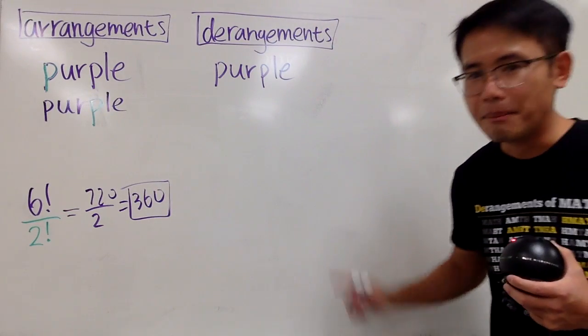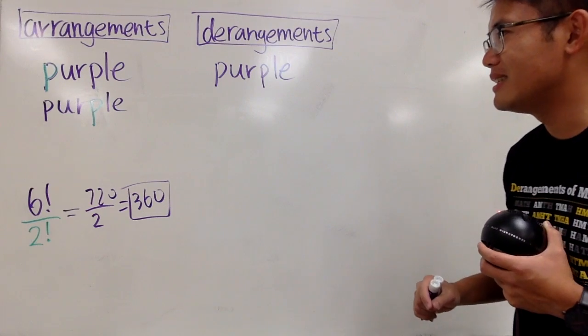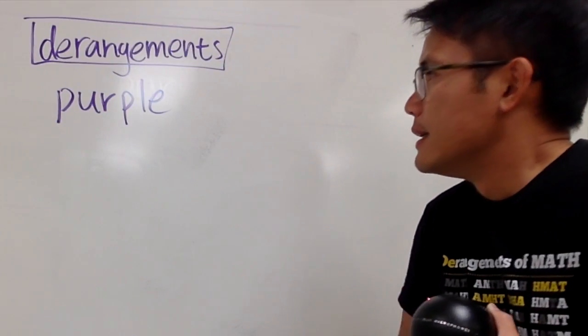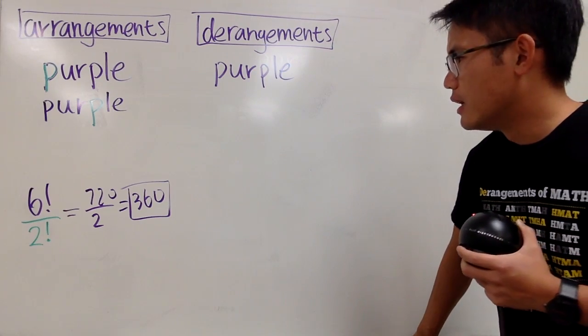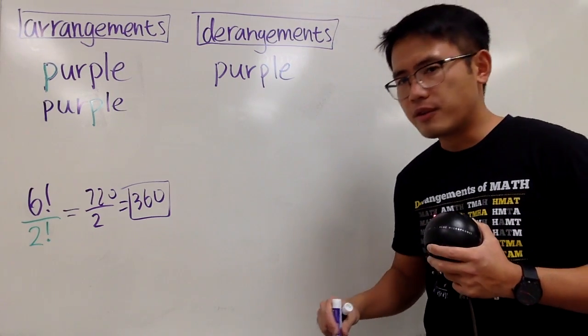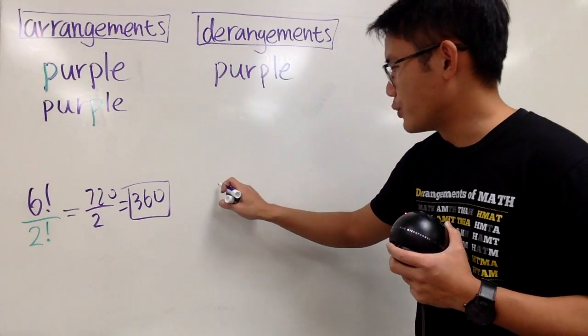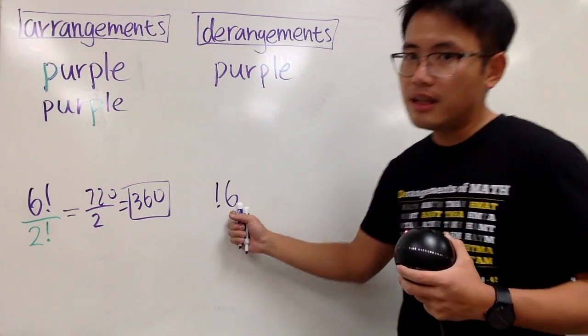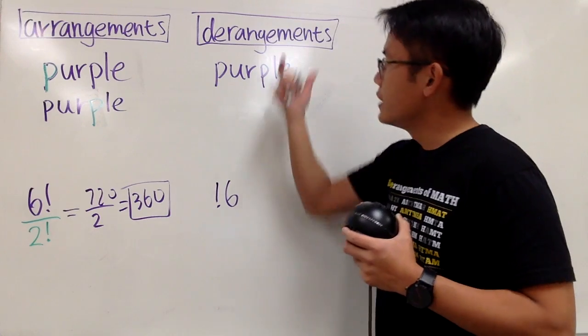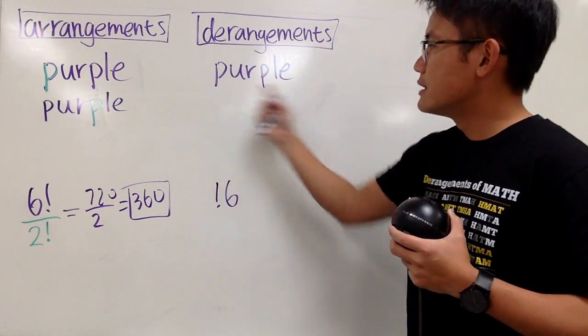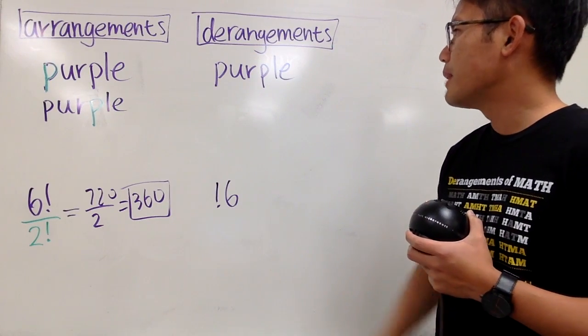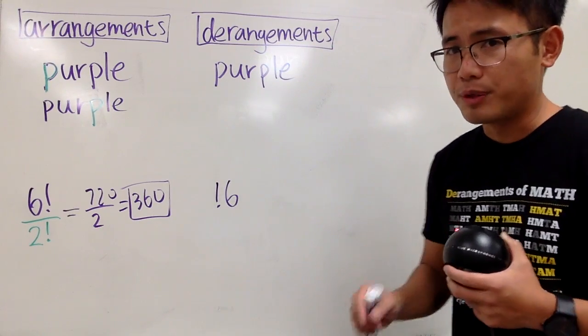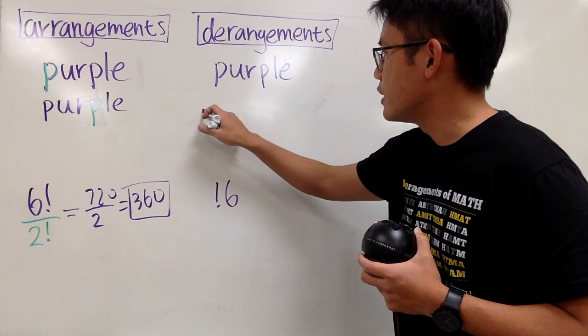Now, this is the main dish. That was just the appetizer. Derangement with repetitions. I have 6 letters. Of course, I should have sub-factorial to help me out, sub-factorial 6. This is the usual number of derangement when we have 6 letters that are all different. But if I have this P and that P being the same, we have to be really careful. Let me draw the first scenario.